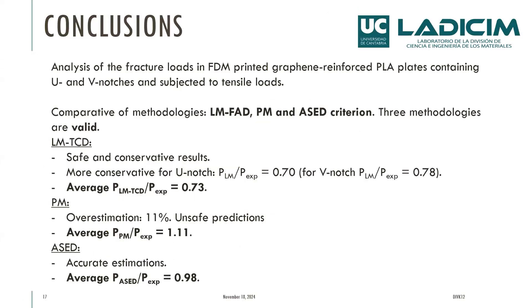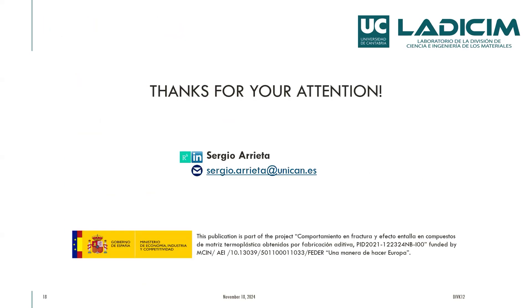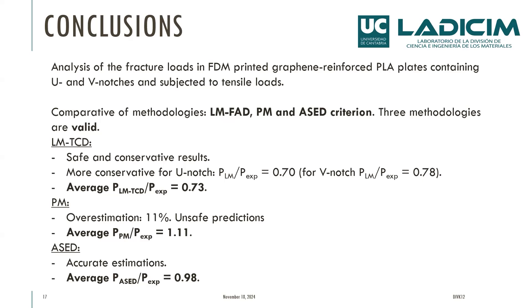In conclusion, we analyzed the fracture load prediction for FDM PLA plates containing U-notches and V-notches. Comparing the three methodologies, all three can adequately predict the fracture loads using this theory. In the case of the line method, we have a safe and conservative result, with a somewhat larger difference between U-notches and V-notches; U-notches are more competitive, and the average ratio between estimated and experimental results is 3.73. For the point method, we have an overestimation of 11% for V-notch predictions but still in a safe condition. For the ASED criterion, we have an accurate estimation and the average ratio is 3.98.